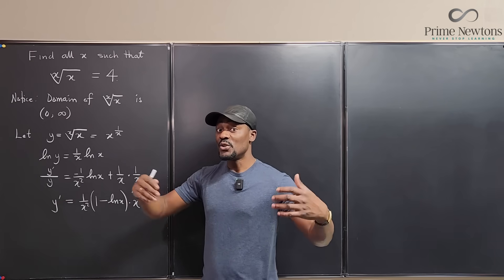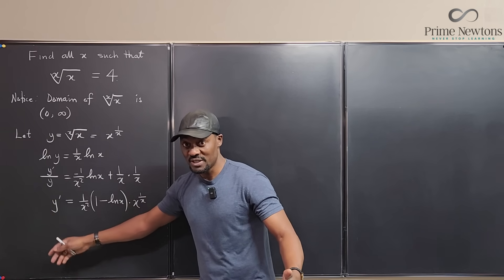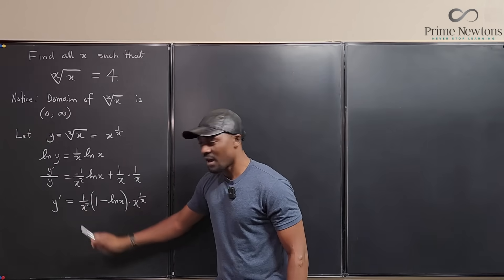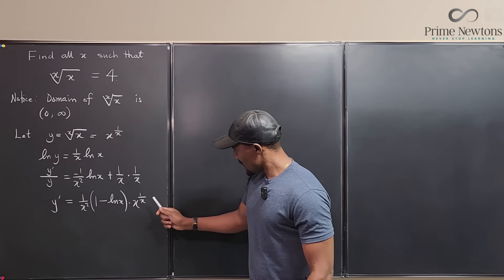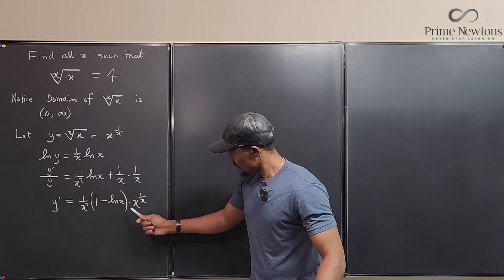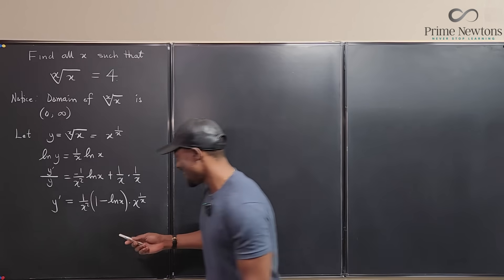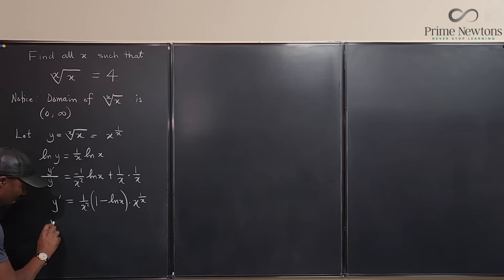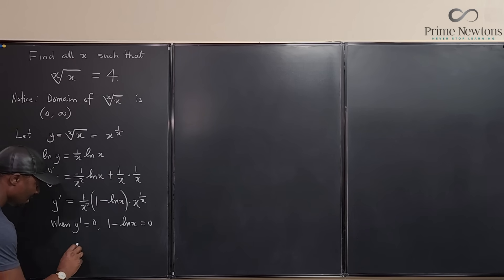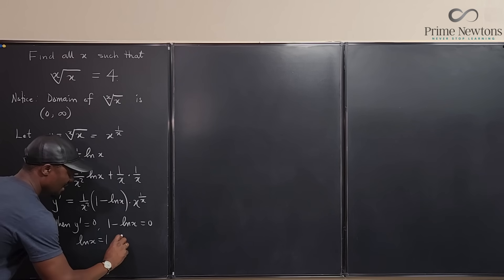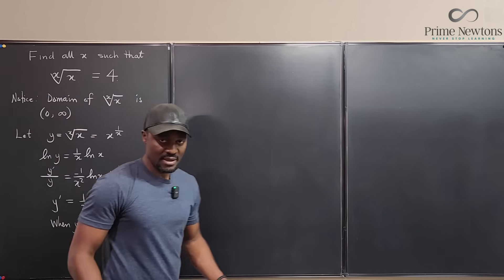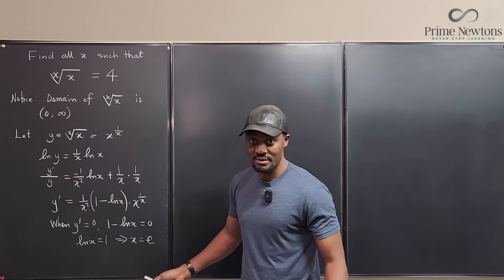To find the critical numbers, we set y′ = 0. The derivative equals zero, so there are three factors. The factor 1/x² can never equal 0 because the numerator is 1. The factor x^(1/x) cannot equal 0 because it's an exponential function — it is never zero for real numbers. But (1 − ln x) can equal 0, so: 1 − ln x = 0, meaning ln x = 1, which means x must be e.